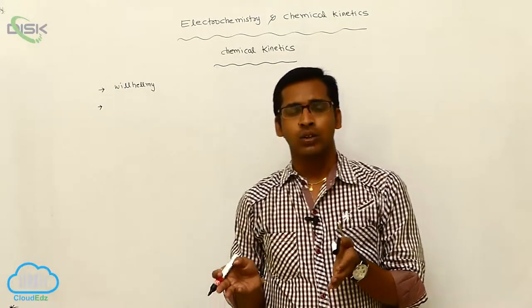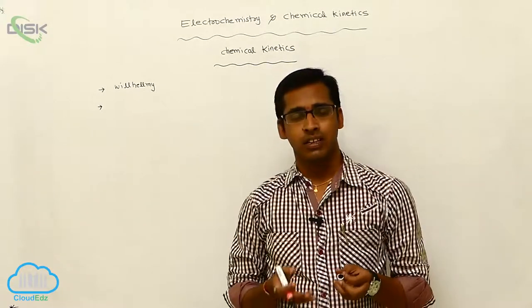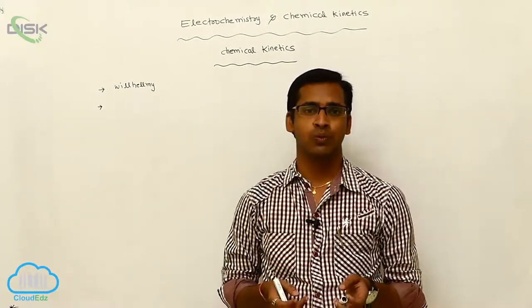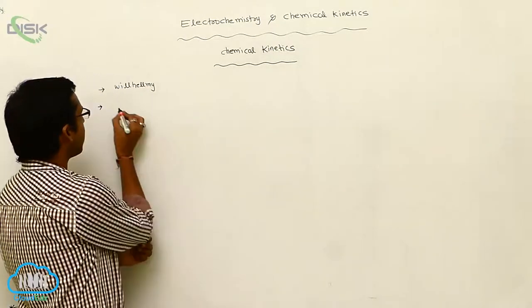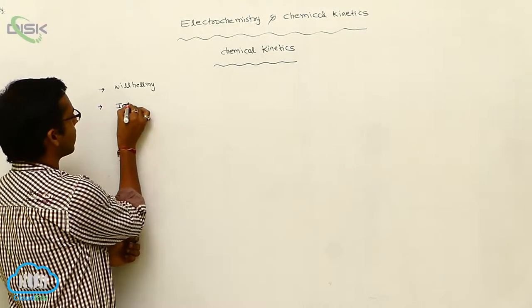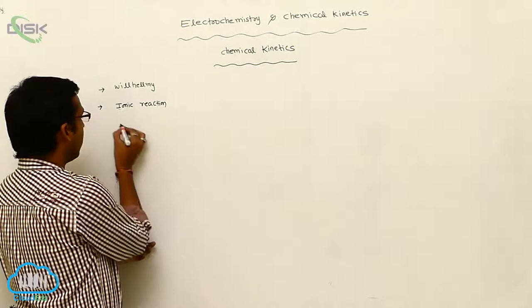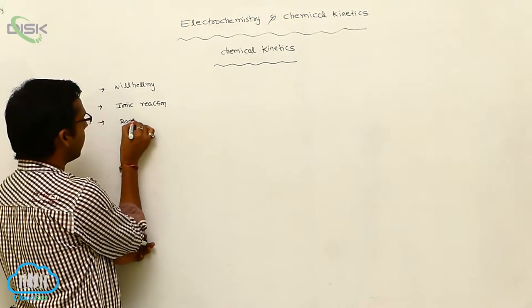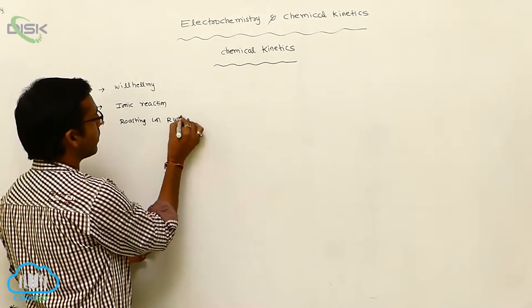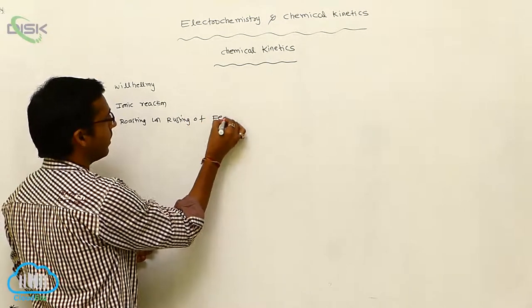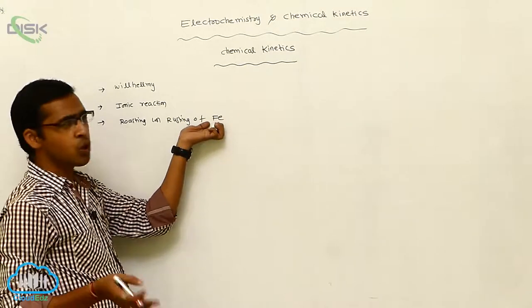In chemistry, there are so many reactions. Some reactions are fast, some reactions are slow, and some reactions are moderate. For example, ionic reactions are very fast reactions. The rusting of iron takes more time, so it is a very slow process.